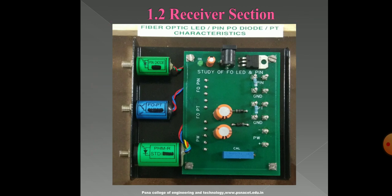The receiver section has three SMA-terminated optoelectronic devices: the first is the Fiber-Optic F4 PIN Photo Diode, the second is the Fiber-Optic F4 Photo Transistor (FOPT), and the third is the Optical Power Meter marked PW. The photo current of the reverse-biased F4 PIN diode, resulting from light incident on its photosensitive surface, is measured by recording the voltage V_PD across RIN1. RIN1 is fixed at 10kΩ. Likewise, the photo current of the F4 photo transistor is measured by recording the voltage V_PT across RIN2, which is fixed at 100Ω.